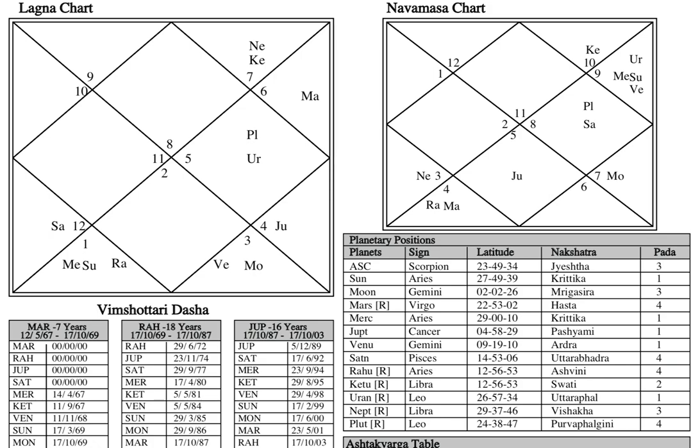You have to analyze the planets and then the nakshatra lords of the nakshatras where these planets are sitting. That will give you a lot of clues about what you may miss sometimes. This analysis will help you to fine-tune events of somebody's life — not just give some vague predictions, but very specific, definite, point-to-point predictions.